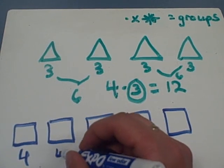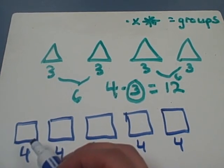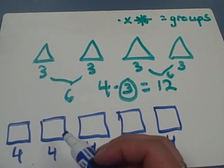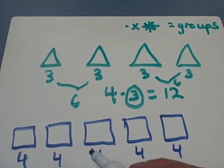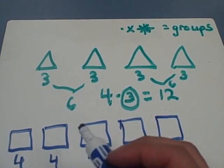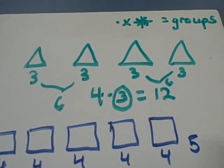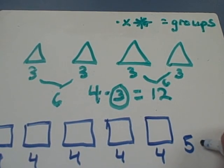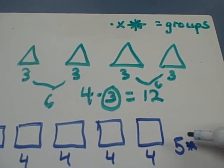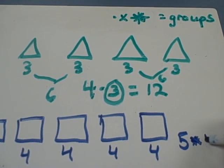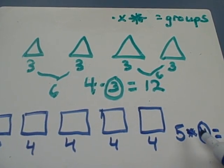All squares have four corners. So really we're talking about each square being a group of four. Let's count how many groups we have: one, two, three, four, five groups. That means five groups of four in each group.